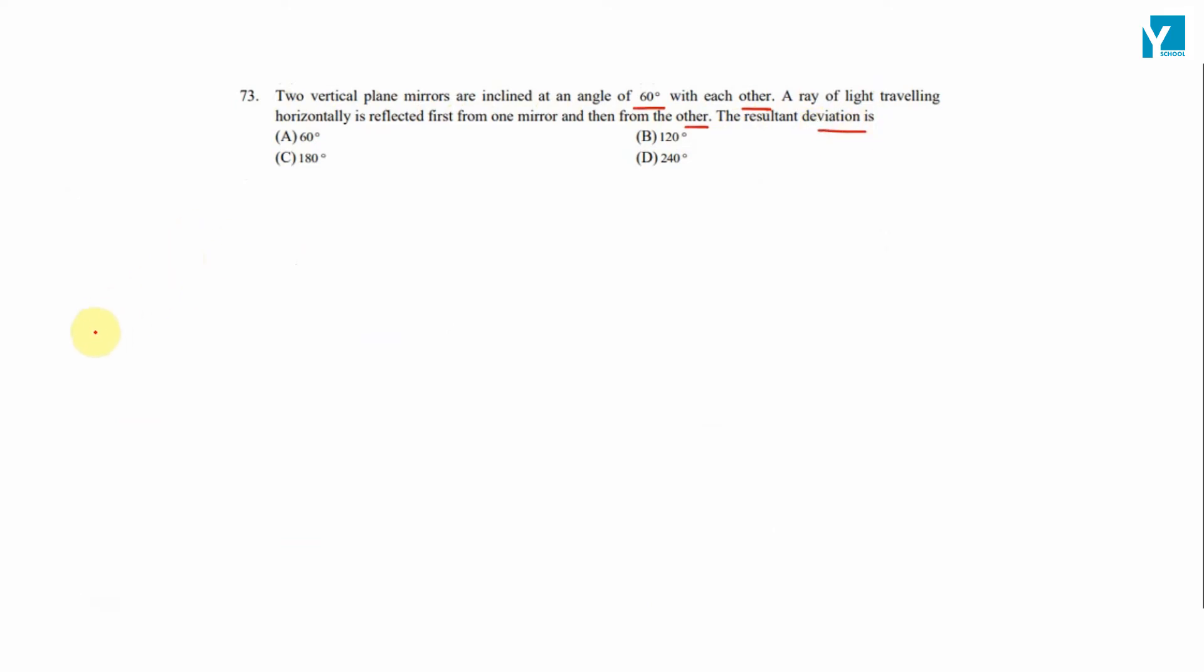So the question is, suppose we have two mirrors. This is mirror 1 and this is mirror 2. The angle between these two is theta, and in the given case, theta is equal to 60 degrees.